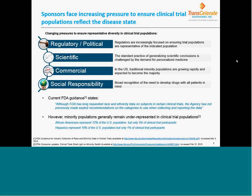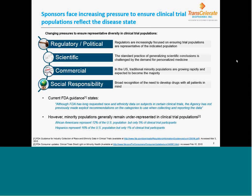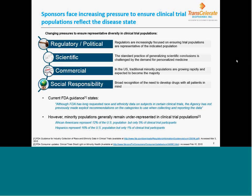Minority populations generally remain underrepresented in clinical trial populations. One group represents 12% of the U.S. population but only 5% of clinical trial participants. Another group represents 16% of the U.S. population but only 1% of clinical trial participants.